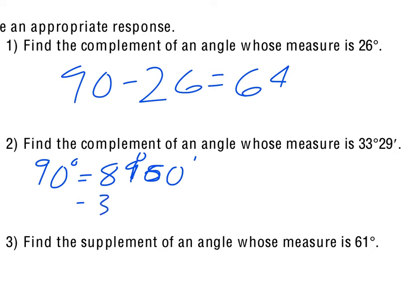So then I can take and subtract the 33 degrees 29 minutes from that. So 60 minutes minus 29 minutes would be 31 minutes, and 89 minus the 33 would be 56 degrees. You should be able to check that 56 plus 33 is 89, and then the 31 and 29 makes 60 minutes, which is a whole other degree. So it does add up to 90 degrees.